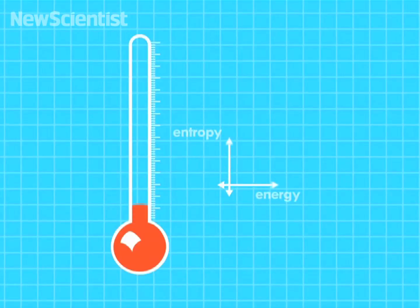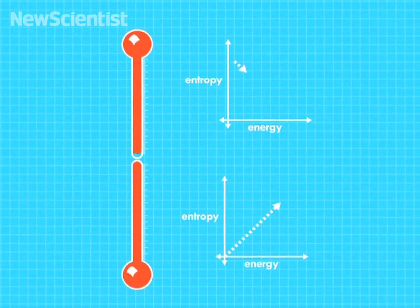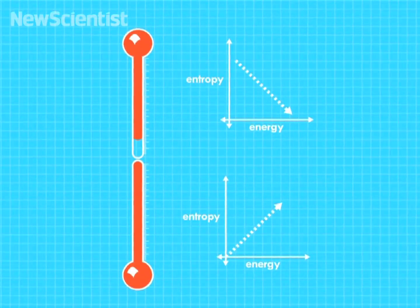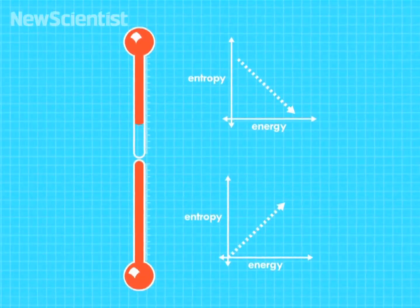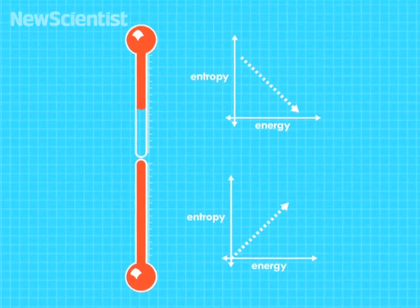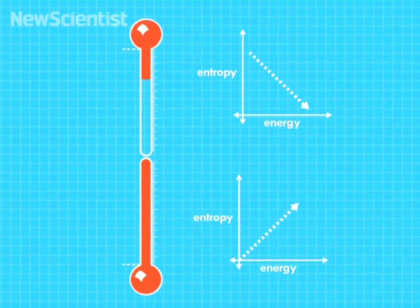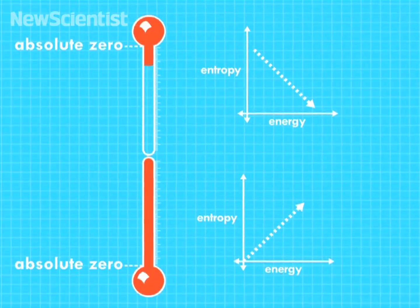So the gas gets hotter, but its entropy is actually decreasing as you add energy. And that makes its temperature negative — lower even than absolute zero.